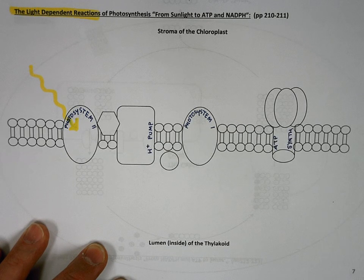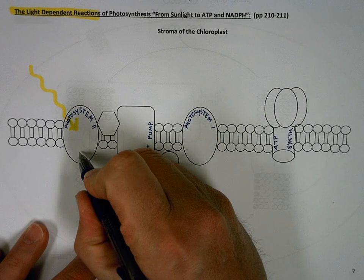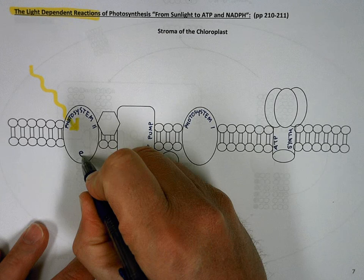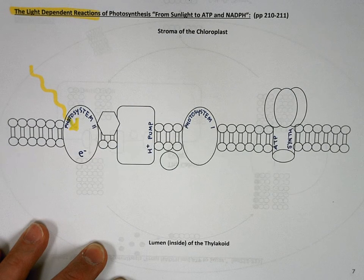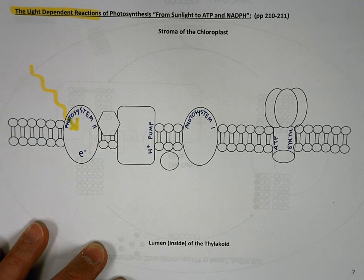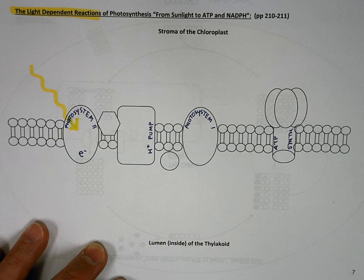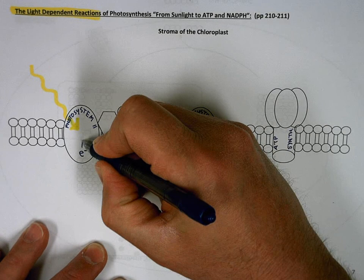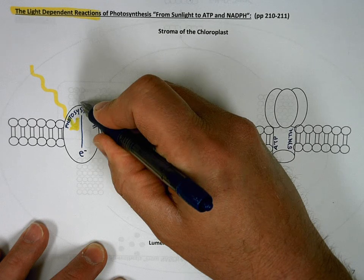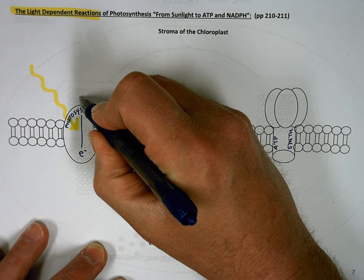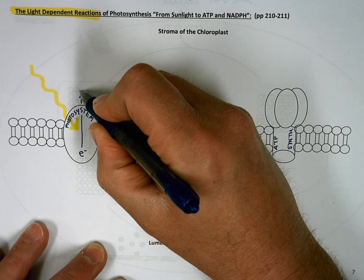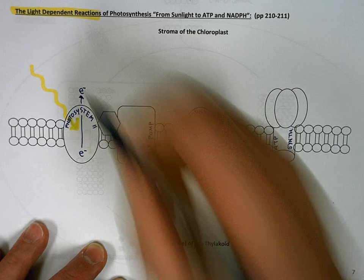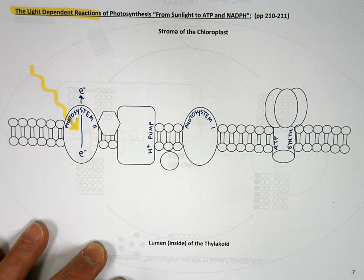There is an electron at the reaction center of photosystem two that gets excited to a higher energy level when that light strikes photosystem two. I'll show it like this jumping up and right out of photosystem two.